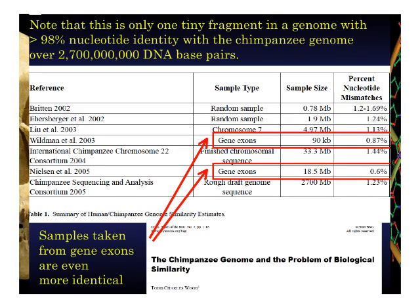0.6, 0.9% difference. Okay, so that's an argument from homology coupled with an underlying argument of redundancy in the code. But I personally don't feel those to be the most compelling arguments for human-chimpanzee common ancestry, compelling as they are.